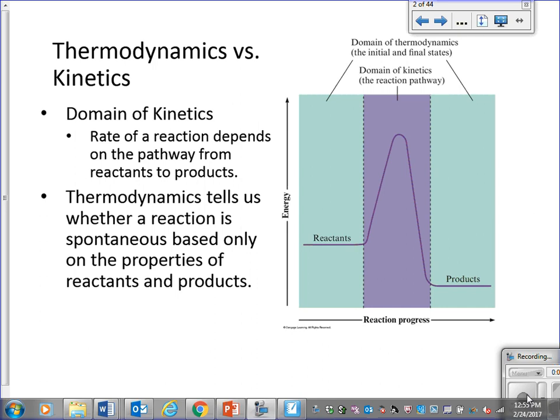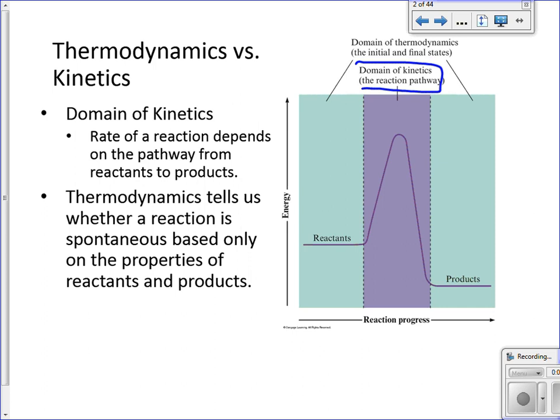So thermodynamics versus kinetics. We're still referring here to the potential energy diagram and their domains are different. The purple section refers to kinetics - the pathway, the mechanism, the intermediates. Those are all the reaction rate, all part of that purple section. On your graph, you should label this as the domain for kinetics.